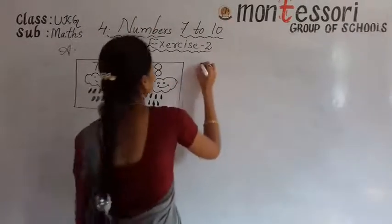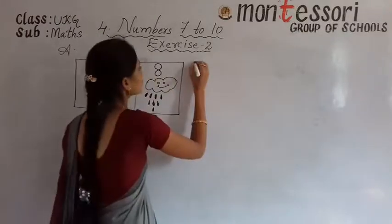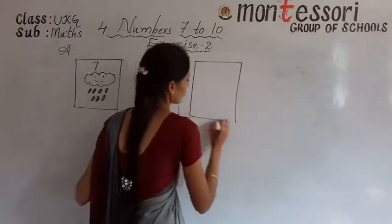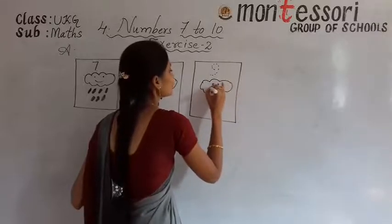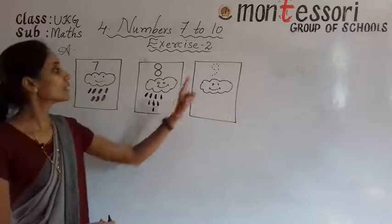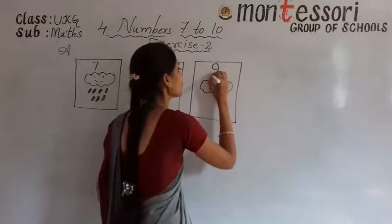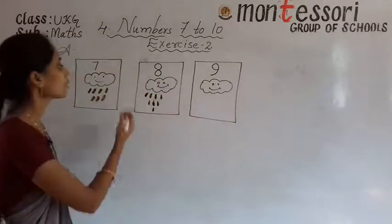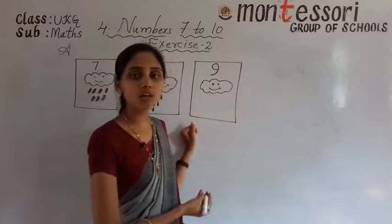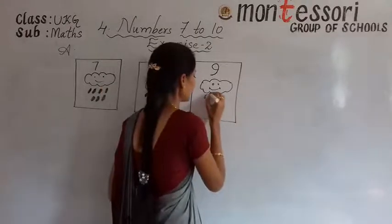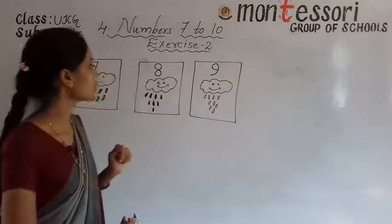Next, what is the number in the third box? To know the number, what we have to do? We have to trace that number. All of you take your pencil and trace on that given dotted number. What is that number? It is 9. So after 7, 8, after 8 it is 9. So how many raindrops we have to draw? 9 raindrops.